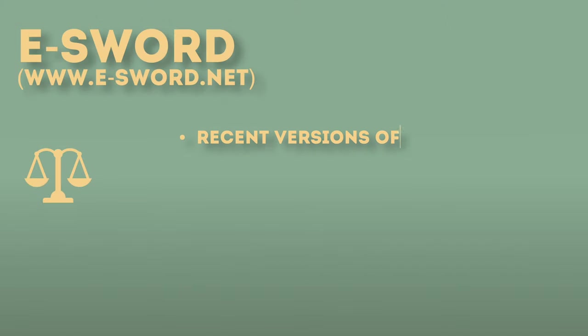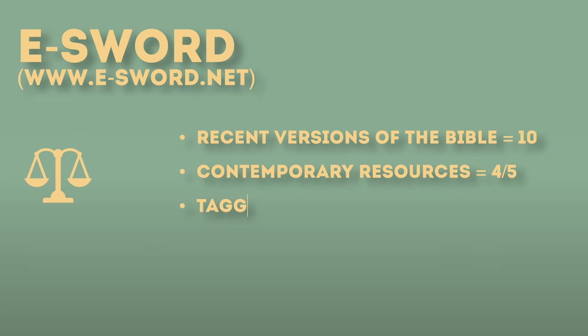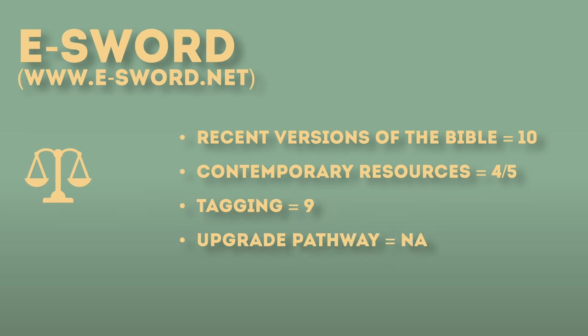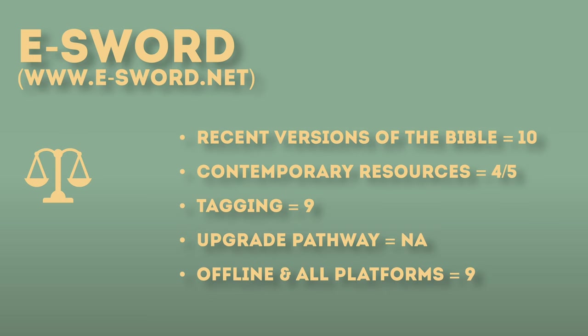What's my score for eSword? Recent versions of the Bible: 10 out of 10. Contemporary resources: maybe a 4 out of 5. Tagging: they do a good job on this — 9 out of 10. Upgrade pathway: not available. Does it run offline and is it available on all platforms? 9 — but some of the features require online access, though it's available on almost all the platforms.